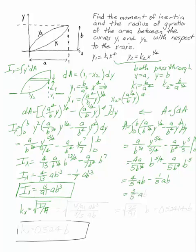Now that I know a, I can plug a back into the square root of i over a. So I've got fifteen over ninety-one AB cubed divided by three-fifths AB. My a's are going to cancel. The b will come out of the square root. That leaves me twenty-five over ninety-one or zero-point-five-two-four-one-four b. So my answer is kx is zero-point-five-two-four b.